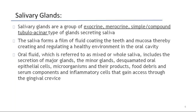Coming to proper salivary glands: salivary glands are a group of exocrine, merocrine, simple or compound tubular acinar type of glands secreting saliva. Merocrine means the secretions from the cells through exocytosis directly enter into the duct. These are called merocrine glands, and salivary glands are a type of merocrine glands.